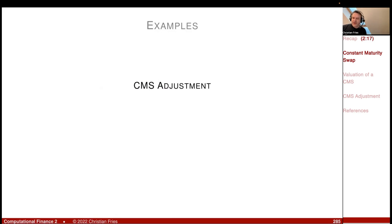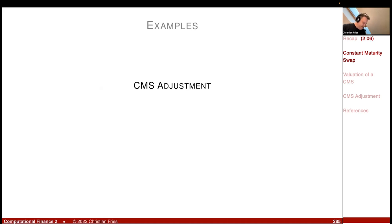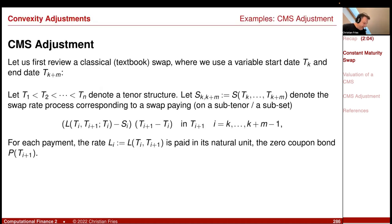Now let's turn to the nice example of a CMS adjustment — the constant maturity swap. It's quite a popular product, though it's a strange one. Let me first review the textbook swap.